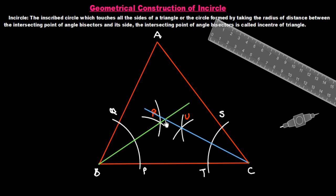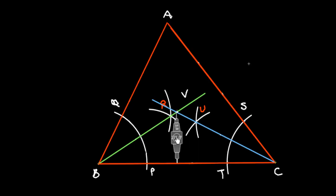This is our point V, the incenter. Now we draw a circle taking V as the center, where the radius is the smallest distance from V to any side of this triangle. We measure the smallest distance from V to the nearest side and use that as our radius.